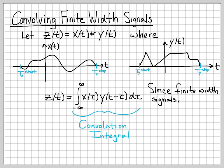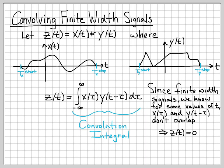Since both x of t and y of t are finite width signals, we know that for some values of t, the quantities in this convolution integral, namely x of tau and y of t minus tau, if I were to sketch those for some values of t, then these wouldn't overlap. When they don't overlap, then their product is 0. And when I integrate 0, I get 0 out for the result of the convolution for that time t.